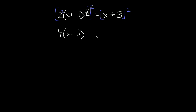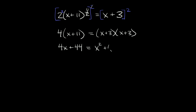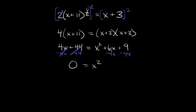Distributing the 4 gives us 4x + 44. FOILing the right side gives x squared + 3x + 3x + 9, which is x squared + 6x + 9. Moving the left side terms over by subtracting 4x and 44, we get 0 is equal to x squared + 2x minus 35.